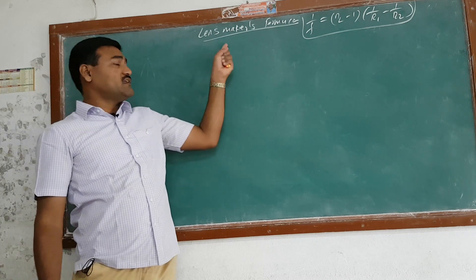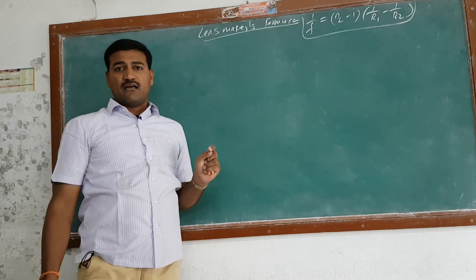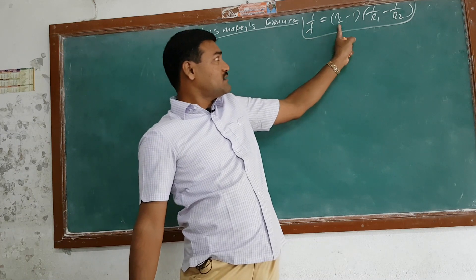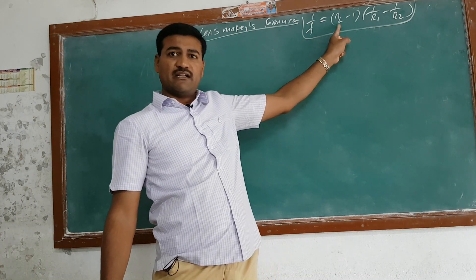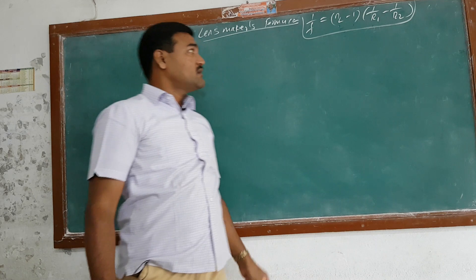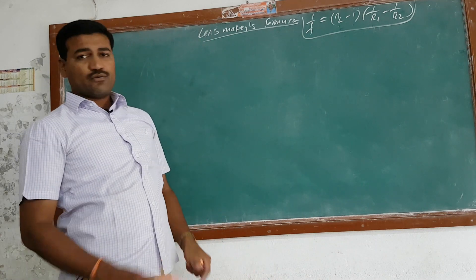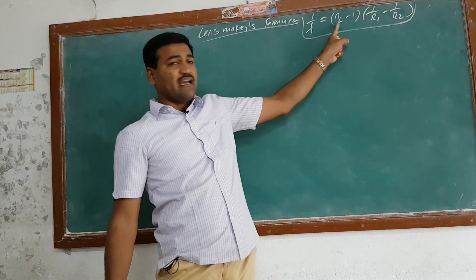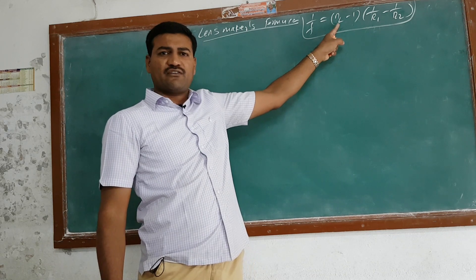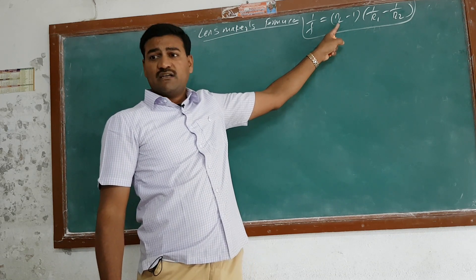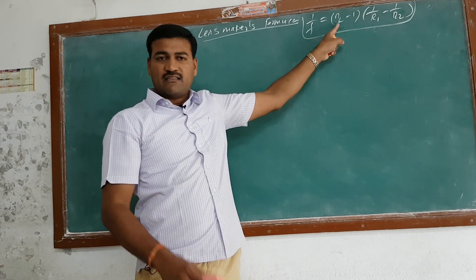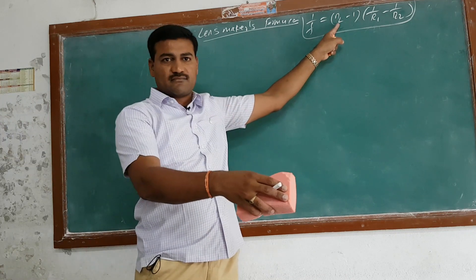Today we are going to derive the lens maker's formula, which is 1/f = (n - 1)(1/R1 - 1/R2). Here f is the focal length of the lens, and n is the absolute refractive index of the lens — meaning the refractive index of the lens with respect to air, as the light rays are coming from air into the lens.